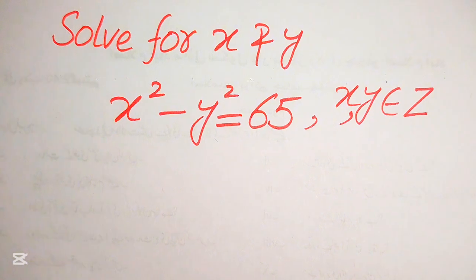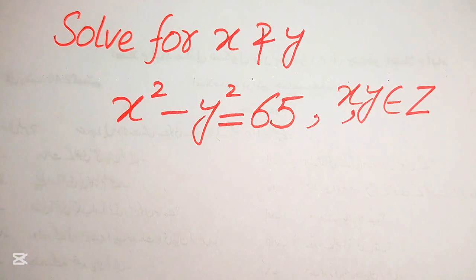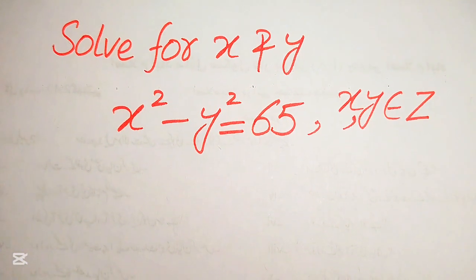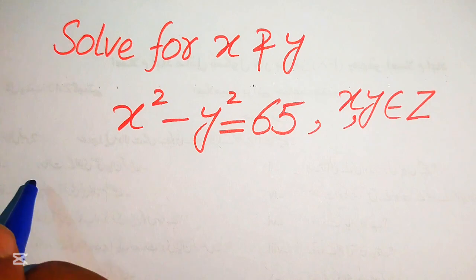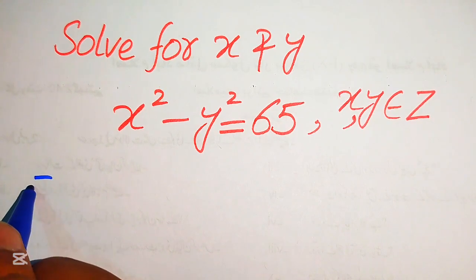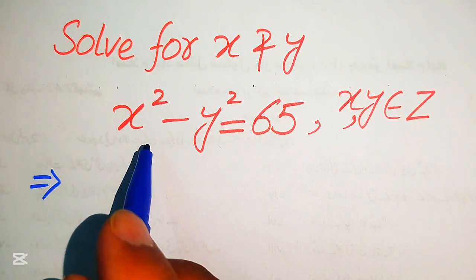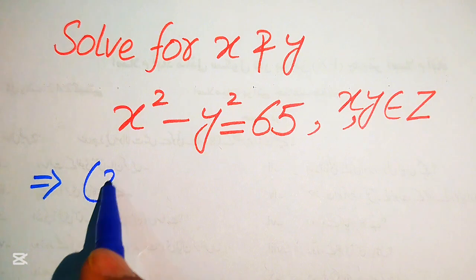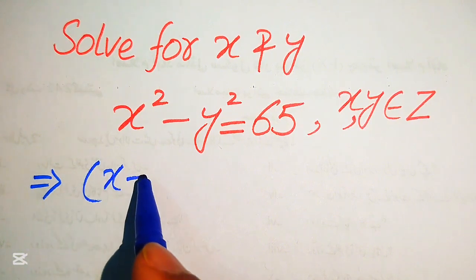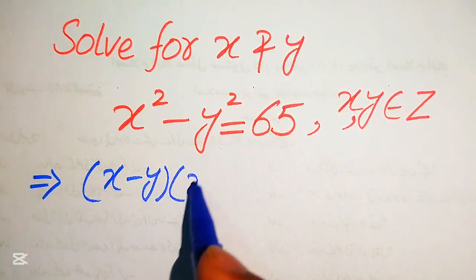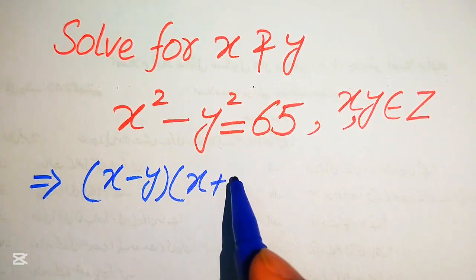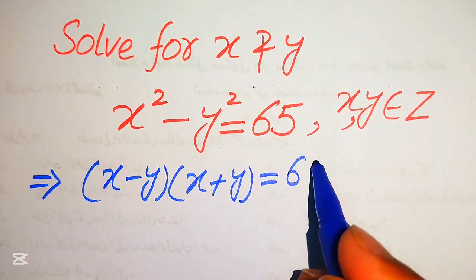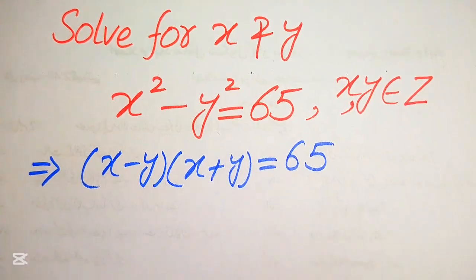I hope you like this method, but if you have any other method in mind, please don't hesitate to write it in the comment section. First, we apply the famous algebraic formula: on the left hand side, x squared minus y squared equals x minus y times x plus y, and it equals 65.